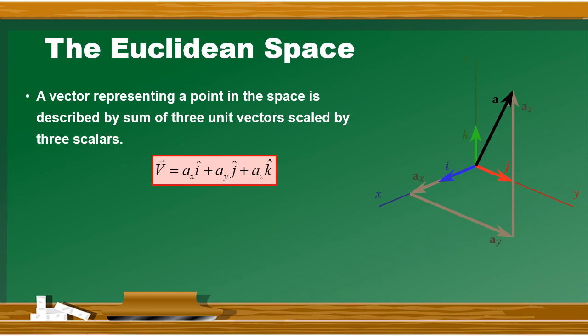This vector is also given another name, which is 'linear combination.' You are very familiar with Euclidean space — we use it extensively in physics and mathematics. This is just a basic idea given to help learn about vector space.